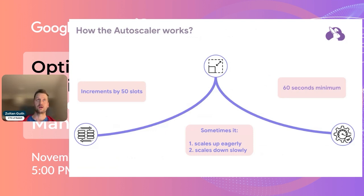So this is challenge one. But before we jump into the second challenge, let's stop a little bit and see how the autoscaler works. If you are on the capacity-based model and you are using reservations, you can set the baseline slots—how many slots you want to allocate all of the time—and you can also set the maximum slots that BigQuery autoscaler can scale up to.